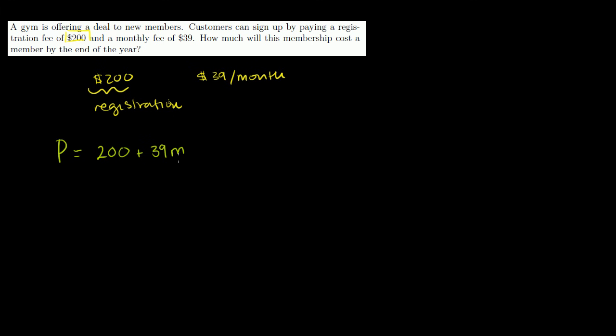Notice, if we stay there one month, we'll have to pay one month times $39. And we would have already paid the $200 registration fee. So it'll be $239. If we stay two months, we pay the $200 registration fee and then we pay 39 times two months, which is like $78 or something. So it'd be $278.